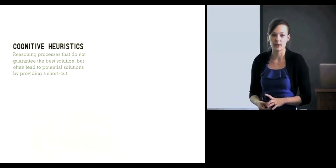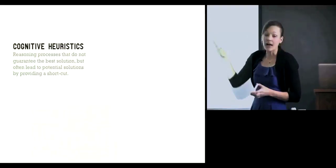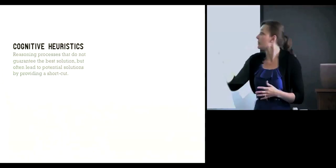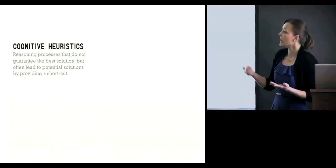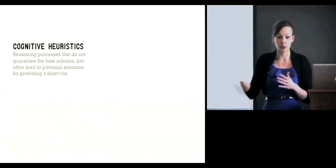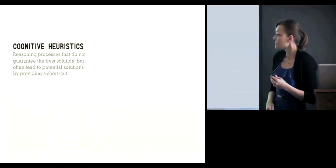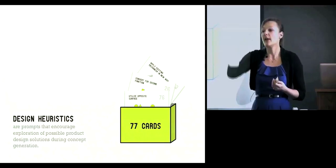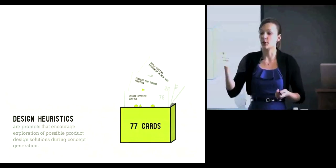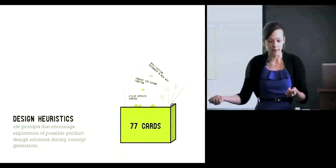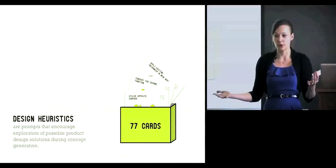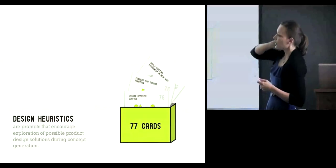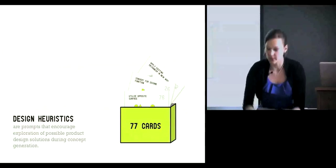The term cognitive heuristics comes from psychology and means some type of reasoning process, some type of shortcut that gets you to a solution — not necessarily the best solution, but a solution to consider. We analogize that to design heuristics, which are prompts that get you quickly to some design solutions. If you use a variety of design heuristics, you'd have a variety of solutions to take along the way in the rest of your design process.